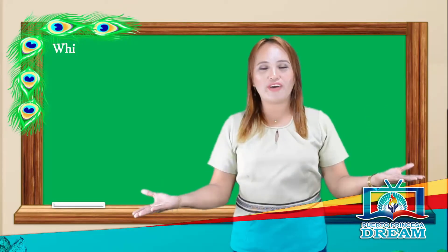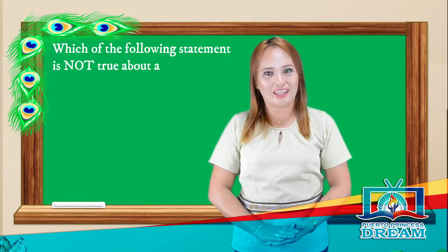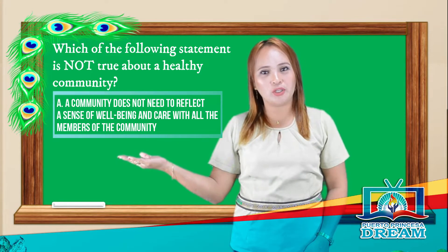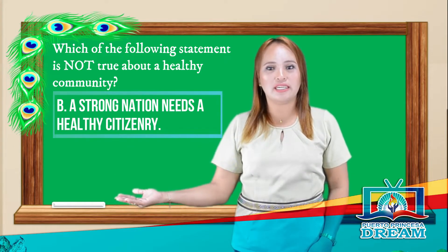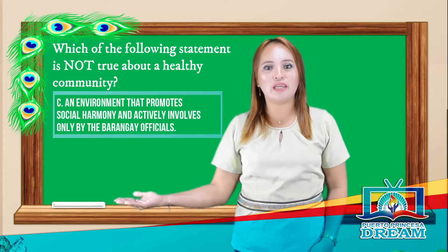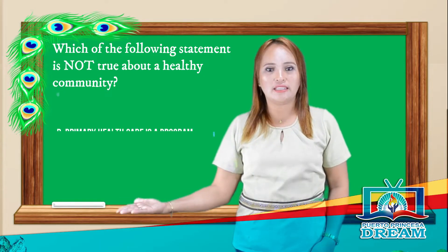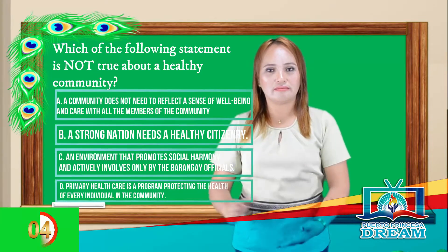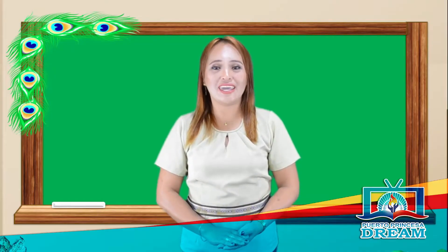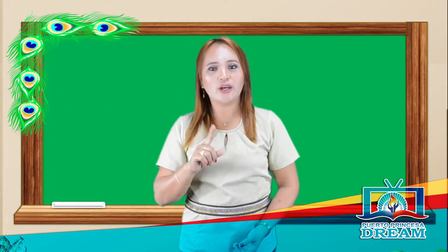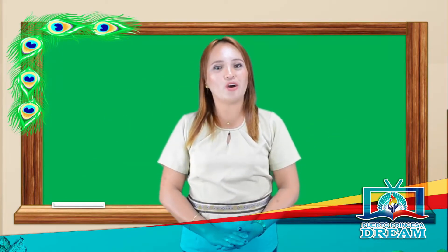For the last item, which of the following statements is NOT true about a healthy community? A. A community does not need to reflect a sense of well-being and care with all the members of the community. B. A strong nation needs a healthy citizenry. C. An environment that promotes social harmony and actively involves healthy members and local officials. D. Primary health care is a program protecting the health of every individual in the community. The answer is A. What is your score? Did you get a perfect score? If not, don't worry — you can do better as we go along with our discussion today.